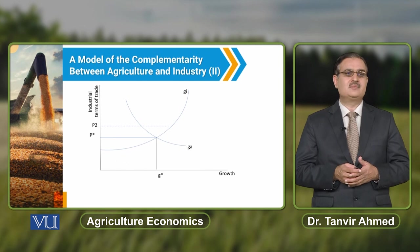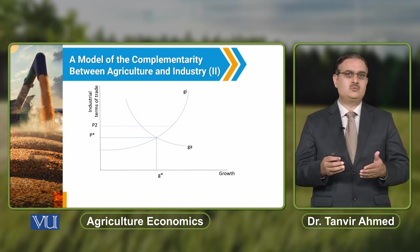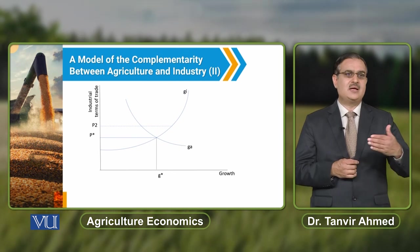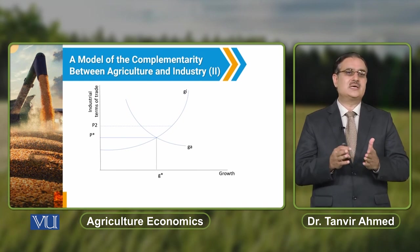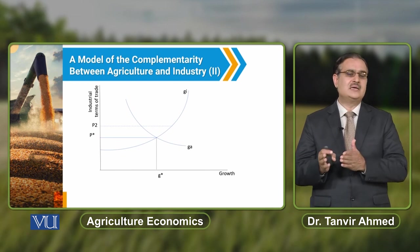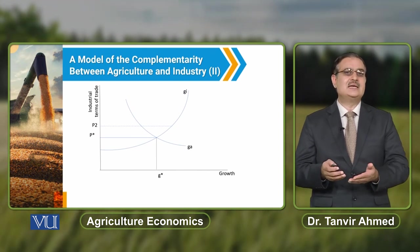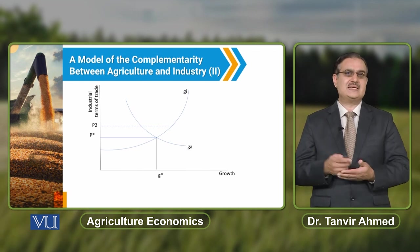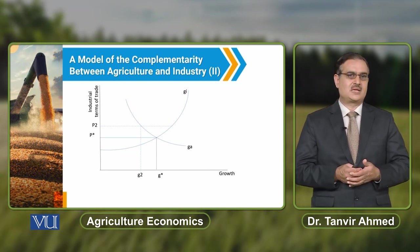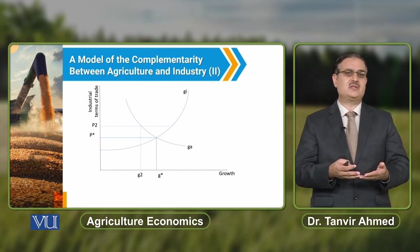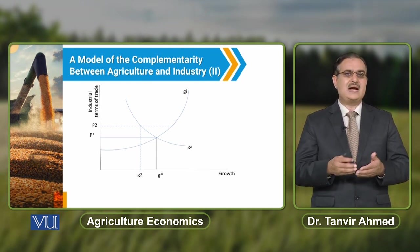If we assume prices of food are too low, the terms of trade value lies above the equilibrium terms of trade. If P2 denotes the terms of trade when prices of food are too low, there is insufficient purchasing capacity in the agricultural sector to buy industrial goods — this is the demand constraint — and the economy grows at a rate of G2.